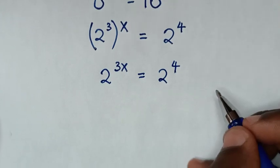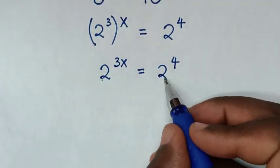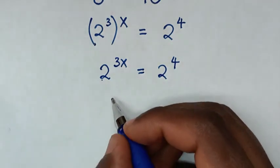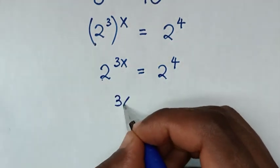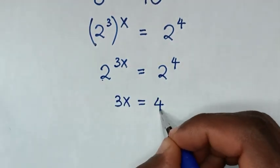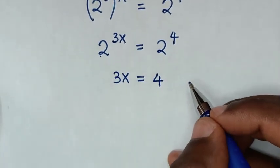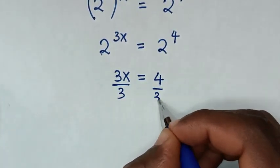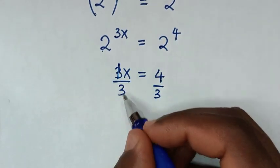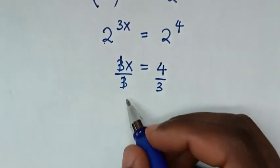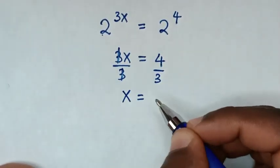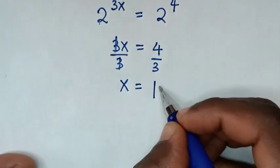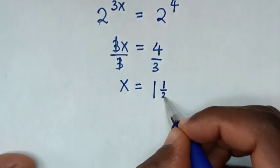In the next step, we have the same base of 2, so we will compare these powers. It will be 3x is equal to 4. Then we divide by 3 on both sides, so the 3 will cancel, giving x is equal to 4 over 3, which is the same as 1 and 1 over 3.